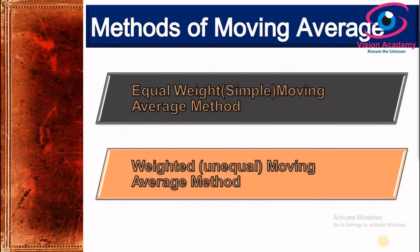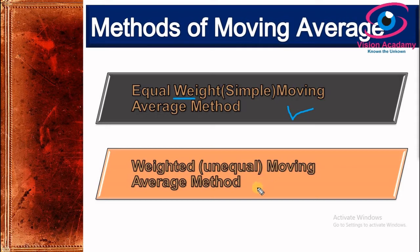In moving average method we have two types: equal weight moving average method and unequal weight moving average method. In the simple moving average method we give equal weight to all observations. In the weighted, or unequal, moving average method we give different weights to different observations.